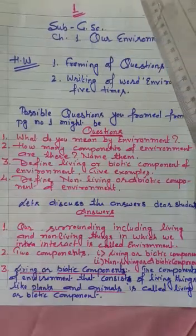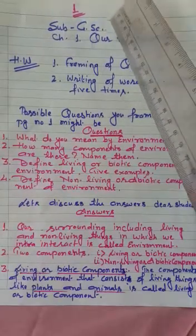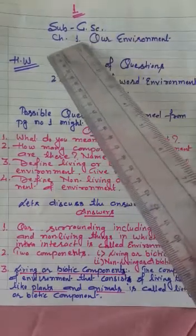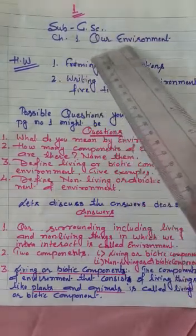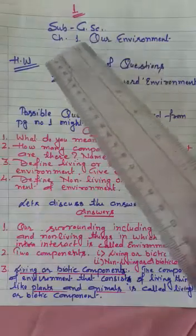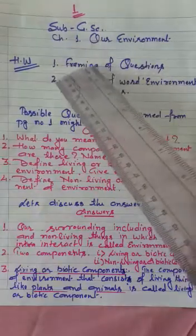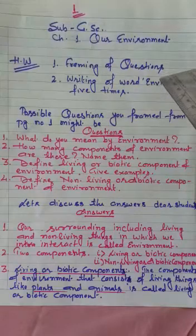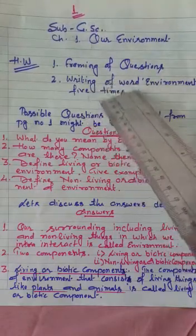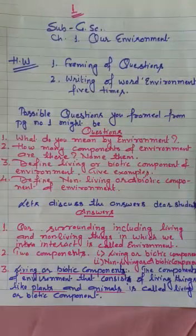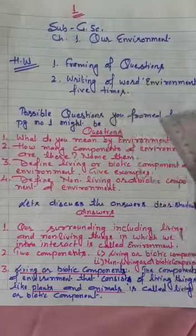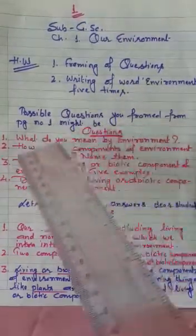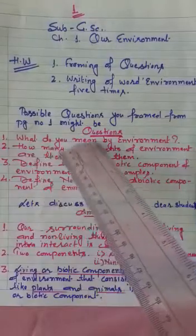Good morning students. As you know, day before yesterday we started Chapter 1 'Our Environment.' I have given you home assignment number one — framing questions from page number one and writing 'world environment' five times. Possible questions you framed from page number one might be: number one, what do you mean by environment?